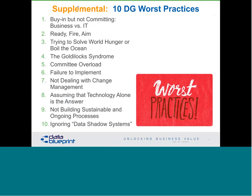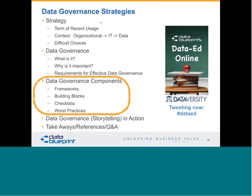A short list of things to avoid: buy-in but not commitment, trying to be overly complex, solving world hunger or boiling the ocean, Goldilocks — not too big, not too small, trying to get it just right, overloading committees, failing to implement, not being able to deal with change management, assuming technology alone is the answer, not building sustainable and ongoing practices, and shadow systems.